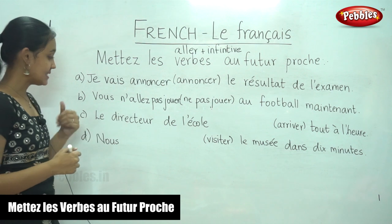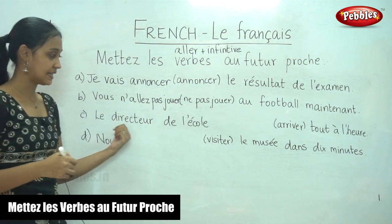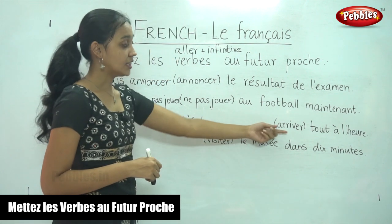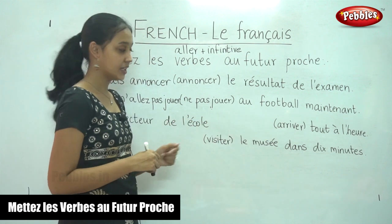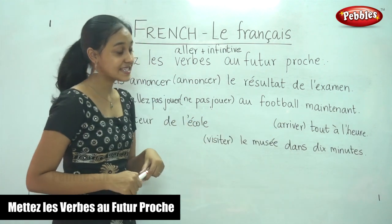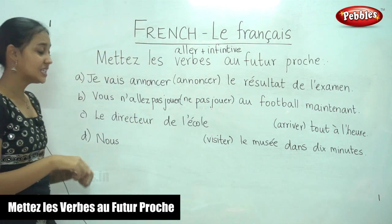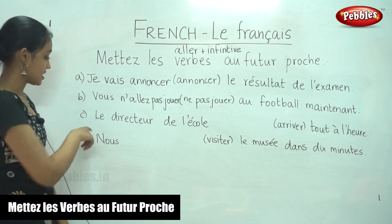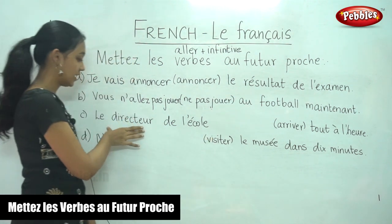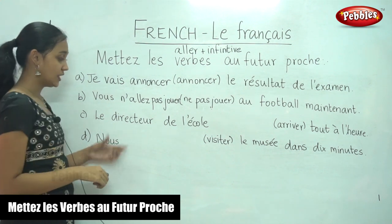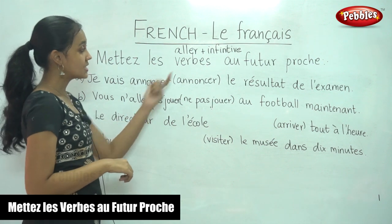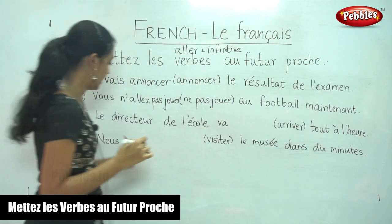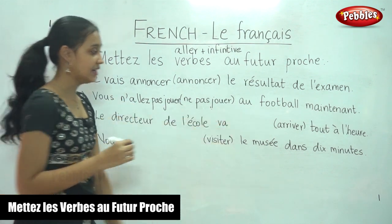Moving on to the next sentence. The verb given to us is arriver. What is our first step? Aller in the present tense. The subject is il — because our subject is le directeur de l'école, which is third person singular. The aller conjugation for il is va. So: il va, and we write our infinitive — il va arriver.